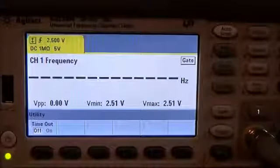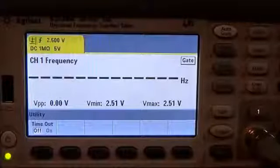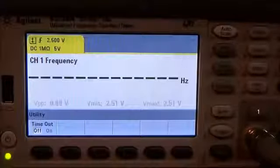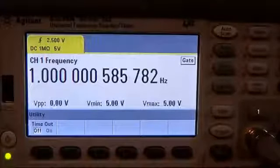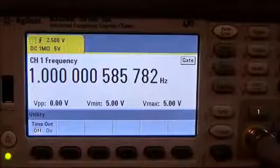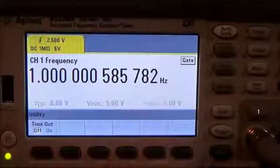Now if we wait about three seconds we should make a measurement and those dashes will go away and we'll actually see the signal. And there we go, we're seeing it out to 12 digits of resolution.